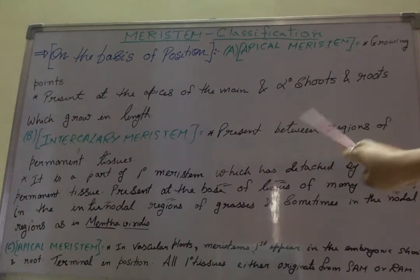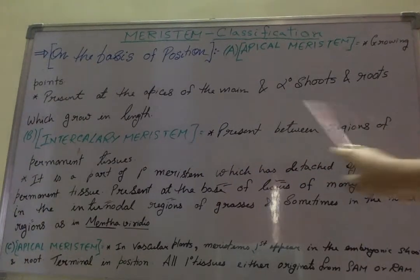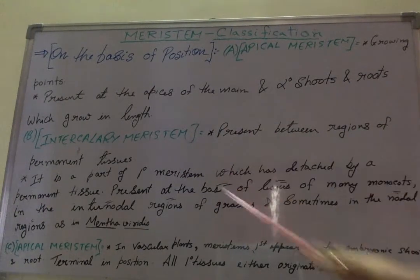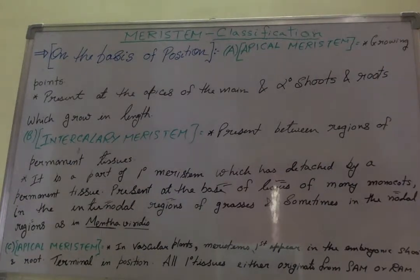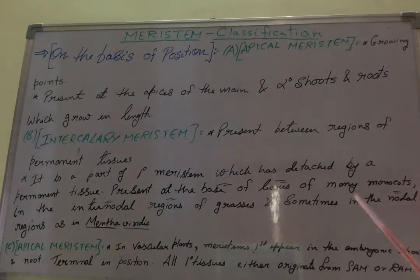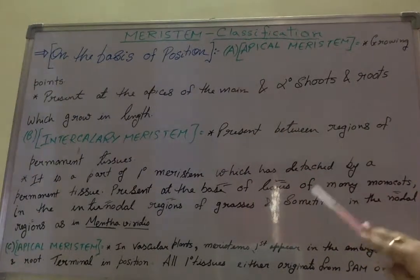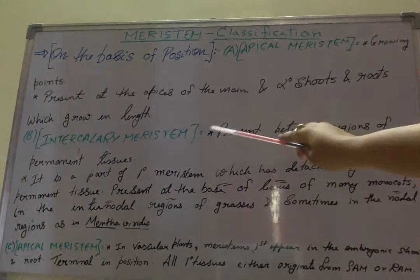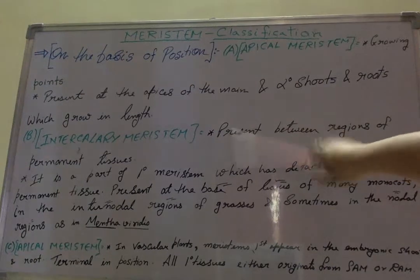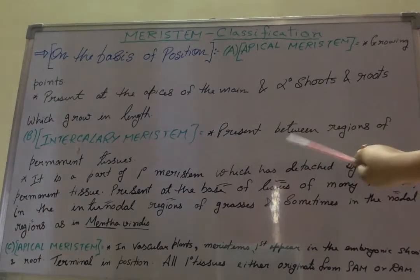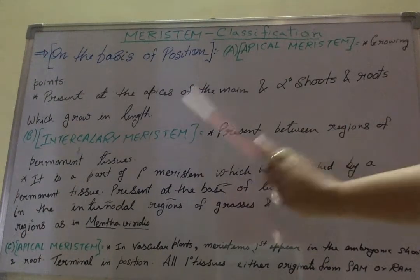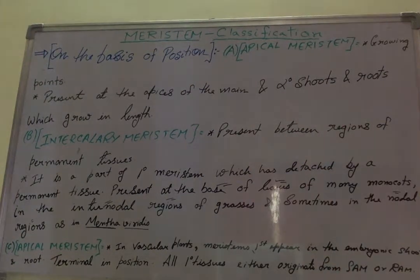The second type of meristematic tissue is intercalary meristem, which is present between regions of permanent tissues. Permanent tissues will be covered in future videos, so just remember that intercalary meristem is present in between regions of permanent tissues.